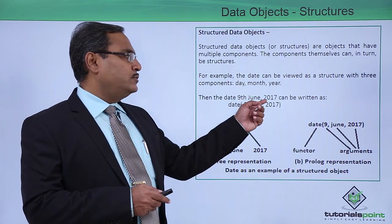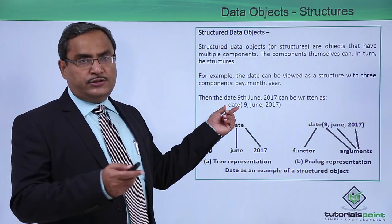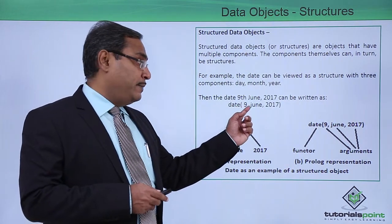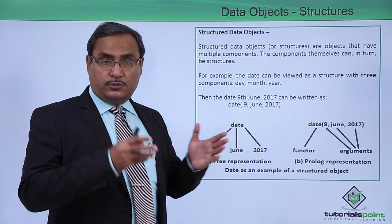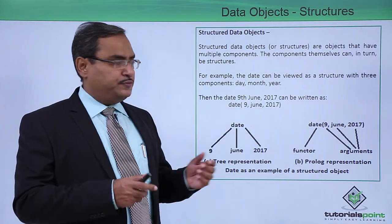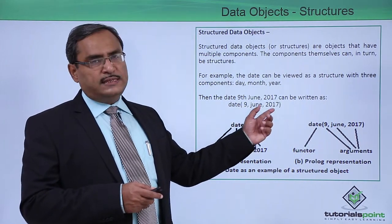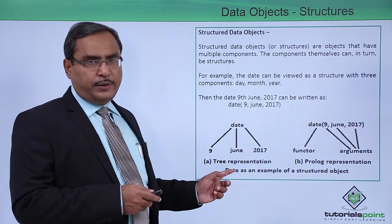Then the date 9th June 2017 can be written in this form. So here is the date. There is a structure name and it has three arguments. Structures will have multiple arguments. So that is the main feature of structures. So here we have 9 June 2017, and it can be represented in this way.